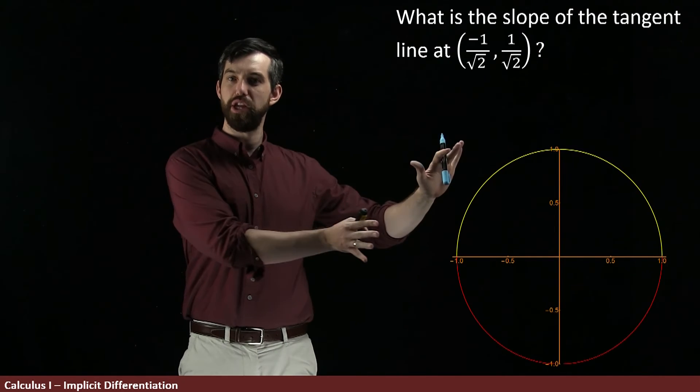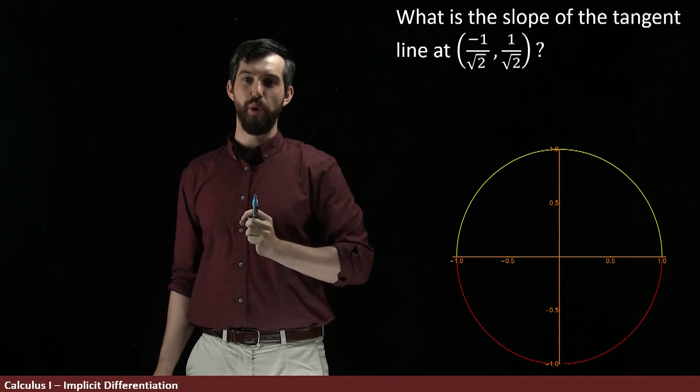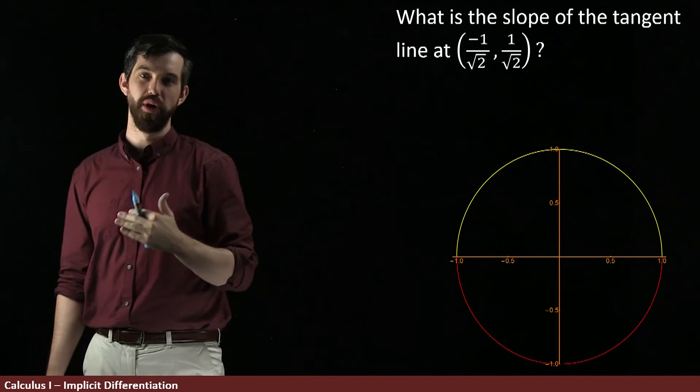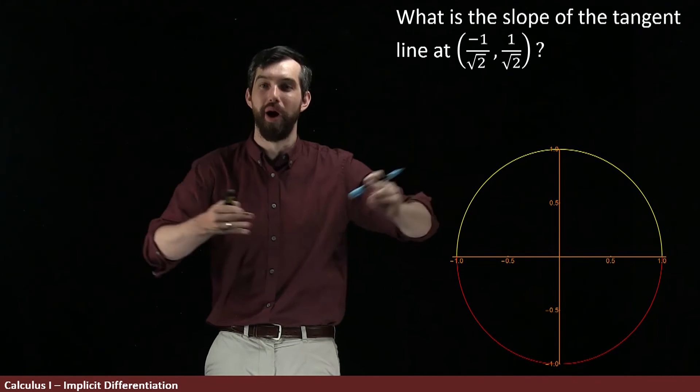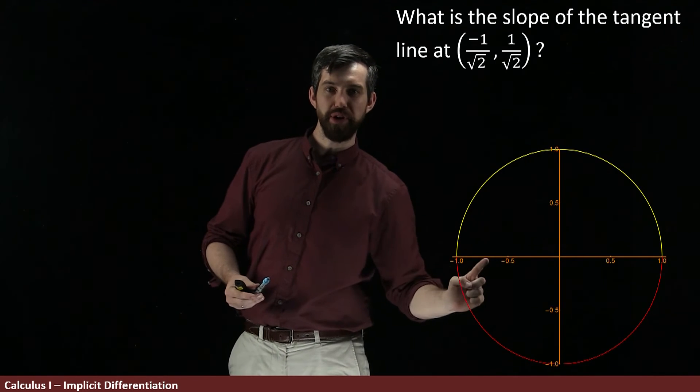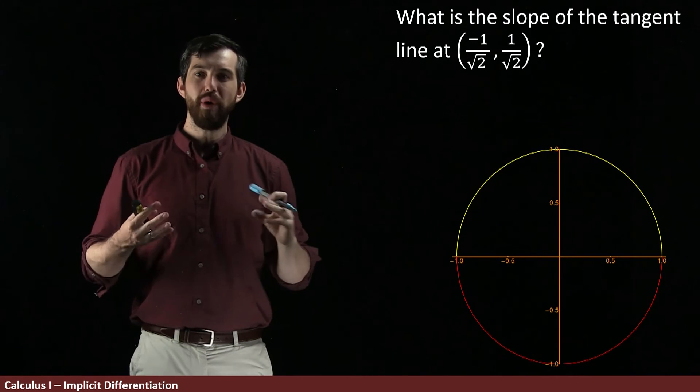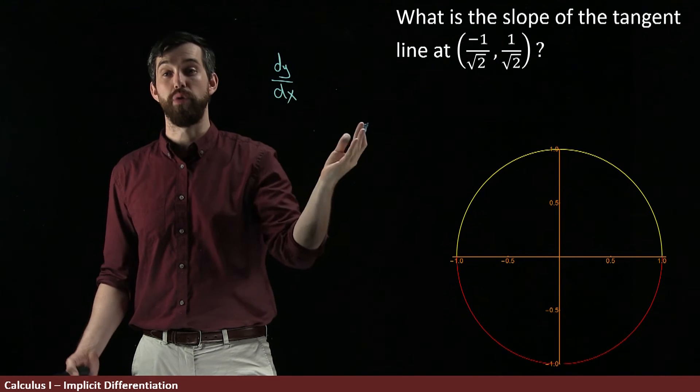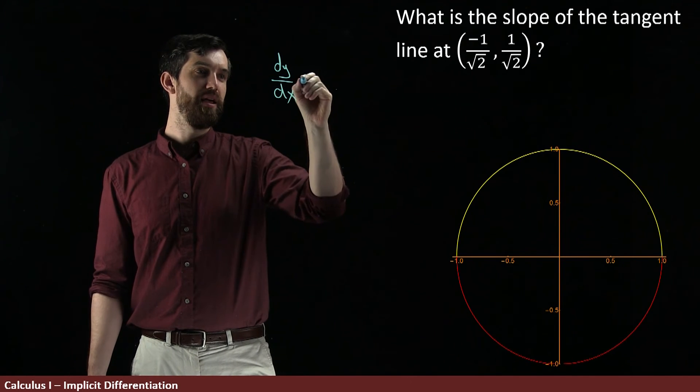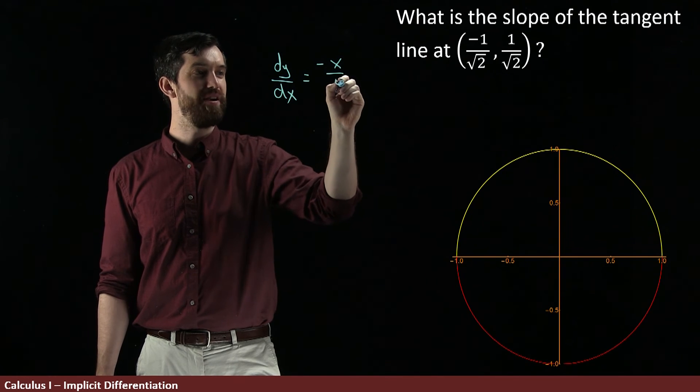So now let's return to the original problem, but now I'm asking the slope at a particular point, minus 1 over root 2 plus 1 over root 2. And you could take the squares of these things, and it would add up to 1. So it is indeed a point on a circle. Indeed, it's a point on a circle right about there. So how do I figure this out? I know that the slope of the tangent line is given by the derivative, is given by dy dx.